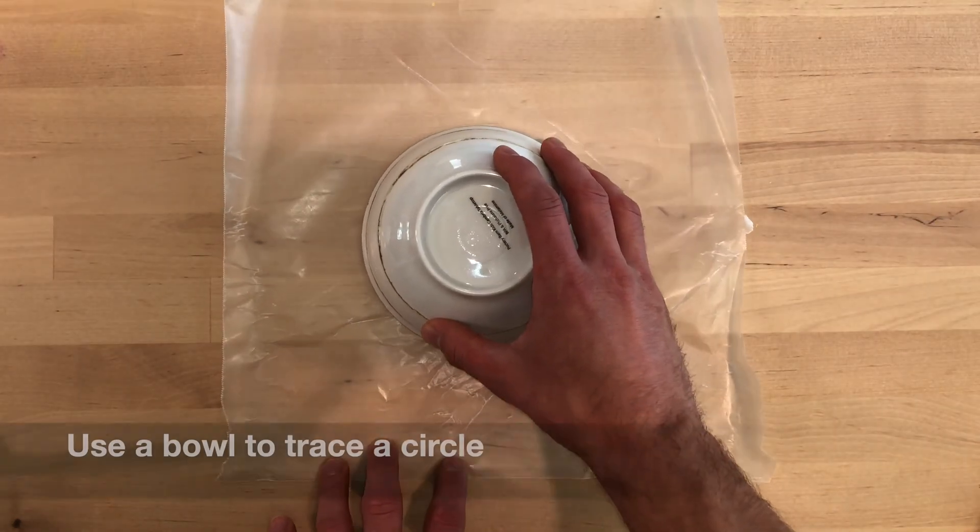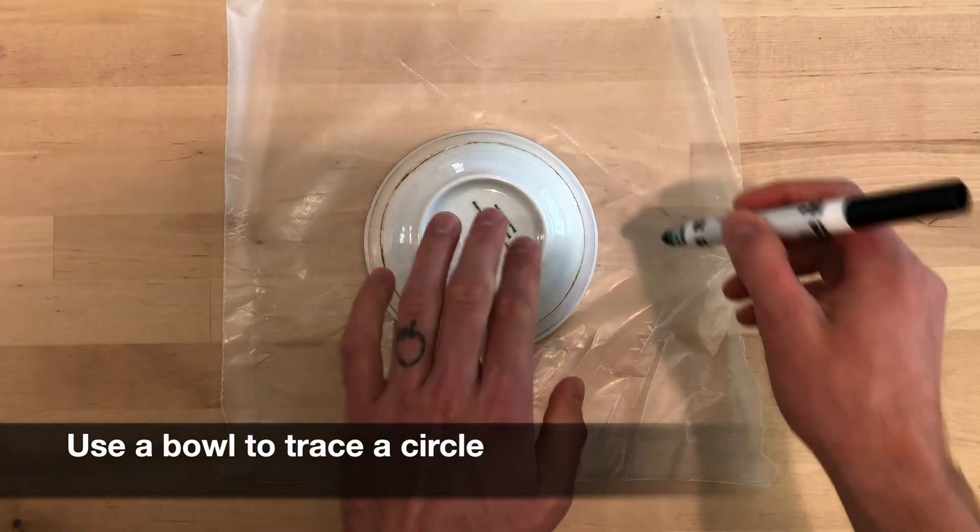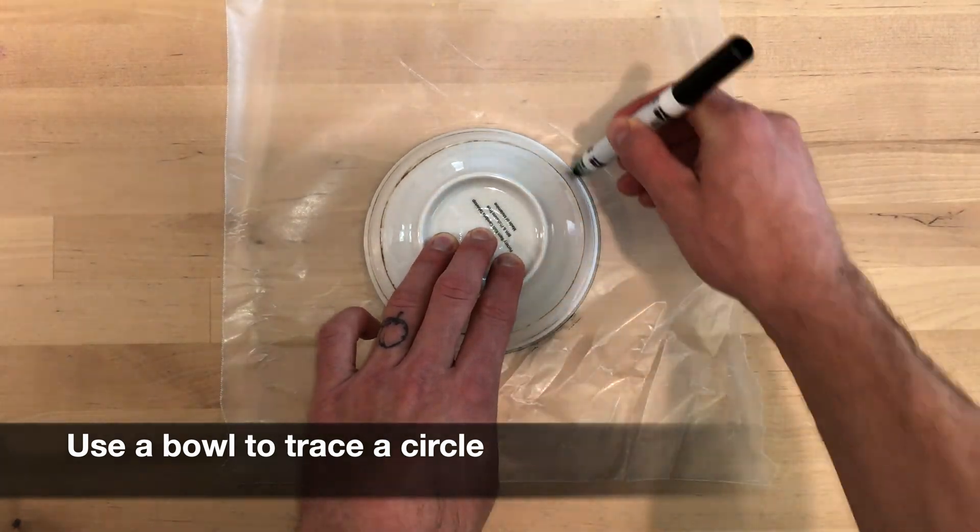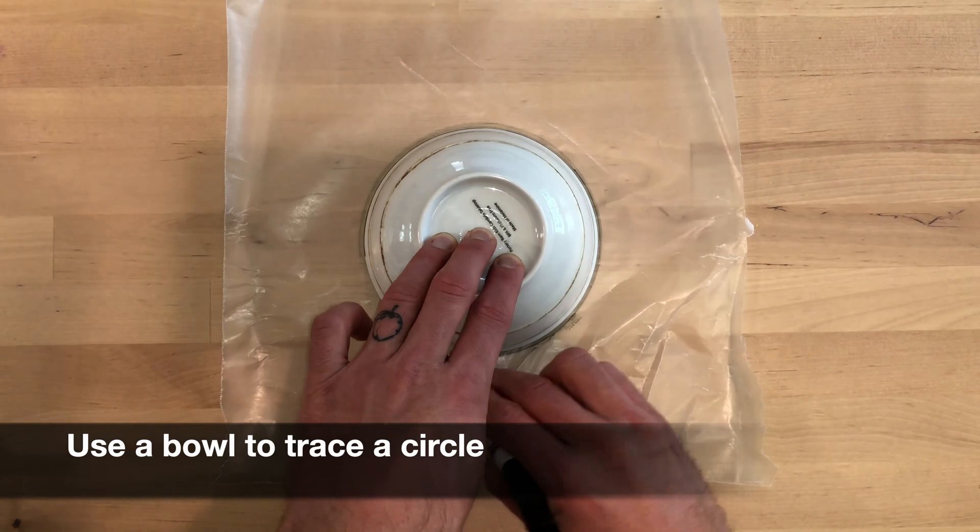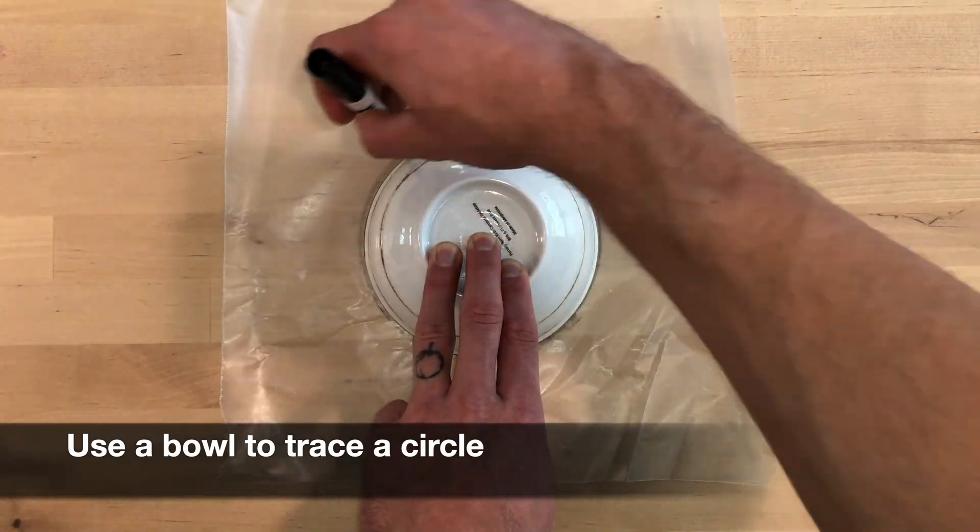I'm going to use a bowl to trace a circle for my membrane. This is to make sure that we have enough wax paper for our membrane to cover our toilet paper roll.